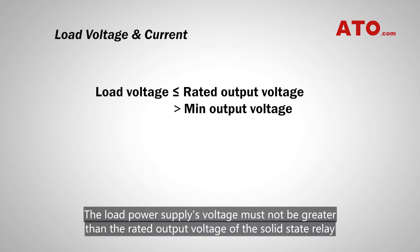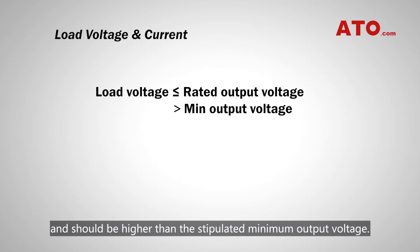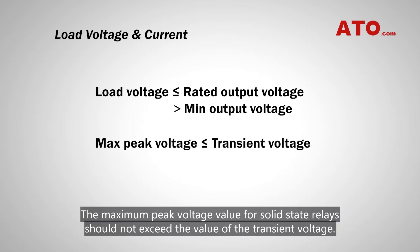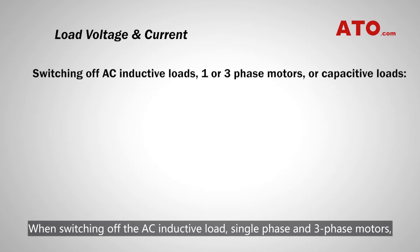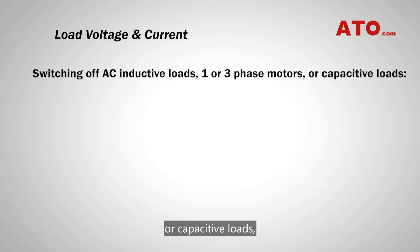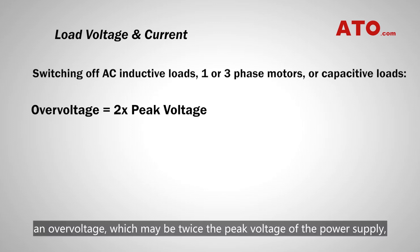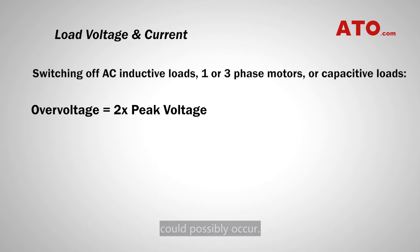Number 2: Determine the load voltage and current. The load power supply's voltage must not be greater than the rated output voltage of the solid-state relay, and should be higher than the stipulated minimum output voltage. The maximum peak voltage value for solid-state relays should not exceed the value of the transient voltage. When switching off the AC inductive load, single-phase and three-phase motors, or capacitive loads, an overvoltage which may be twice the peak voltage of the power supply could possibly occur.